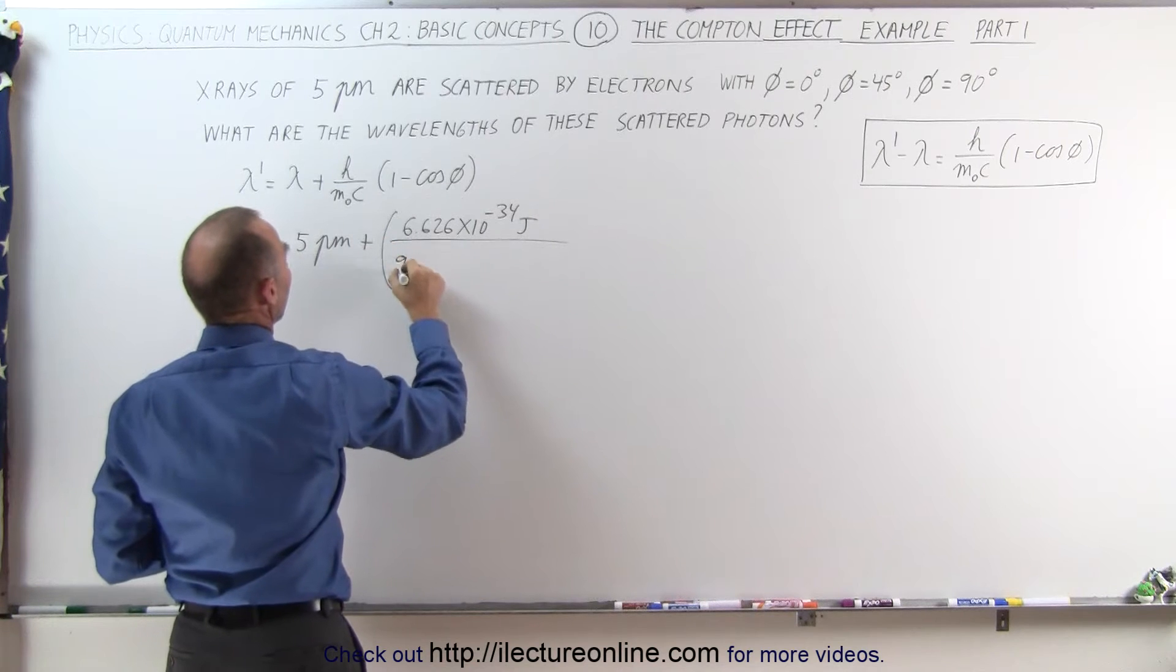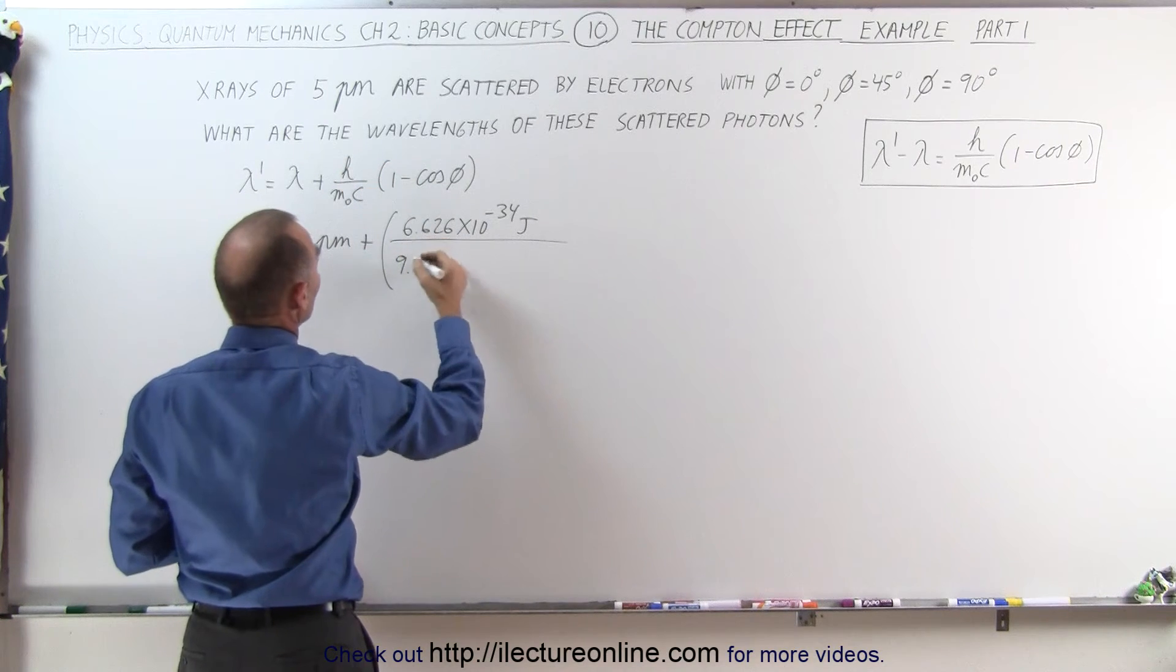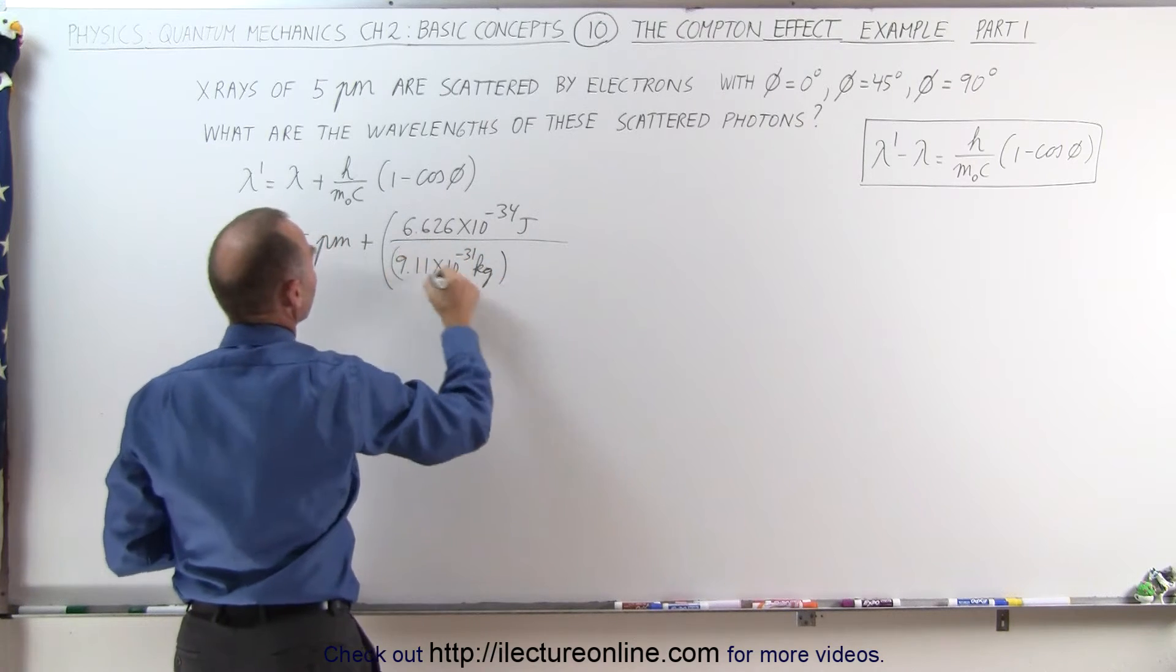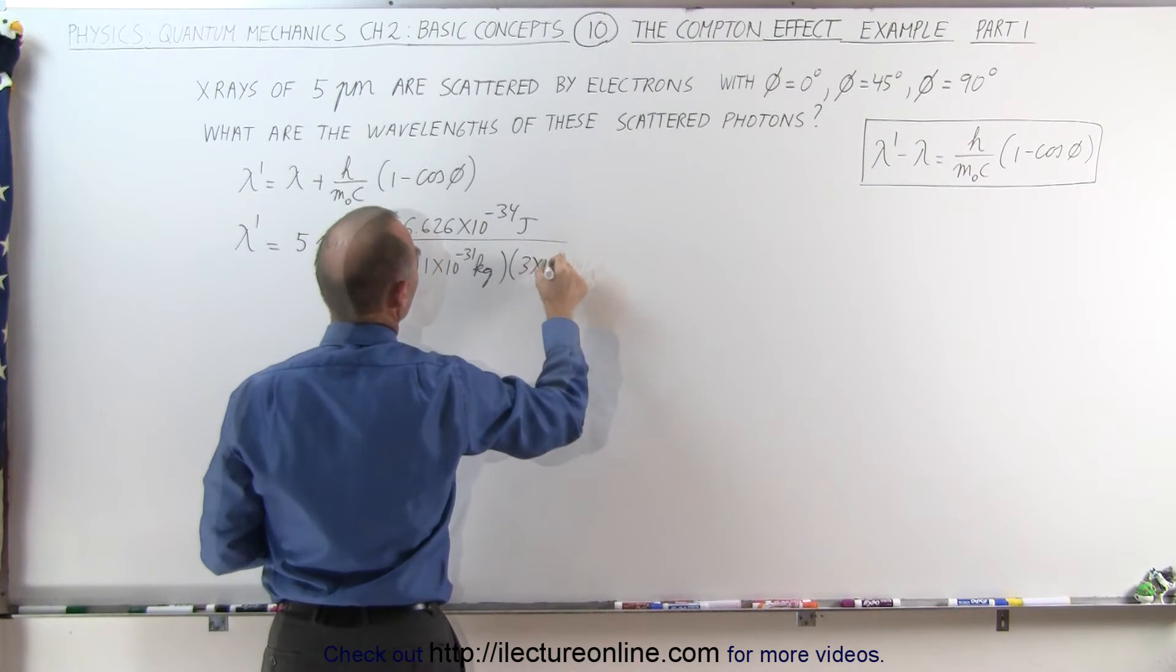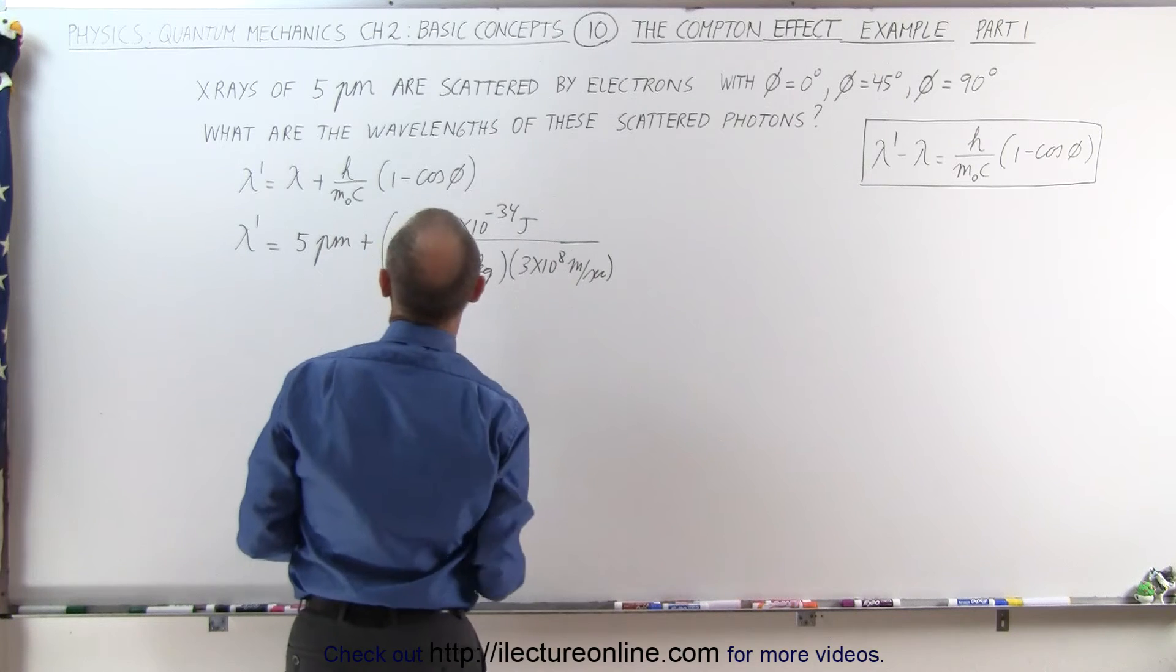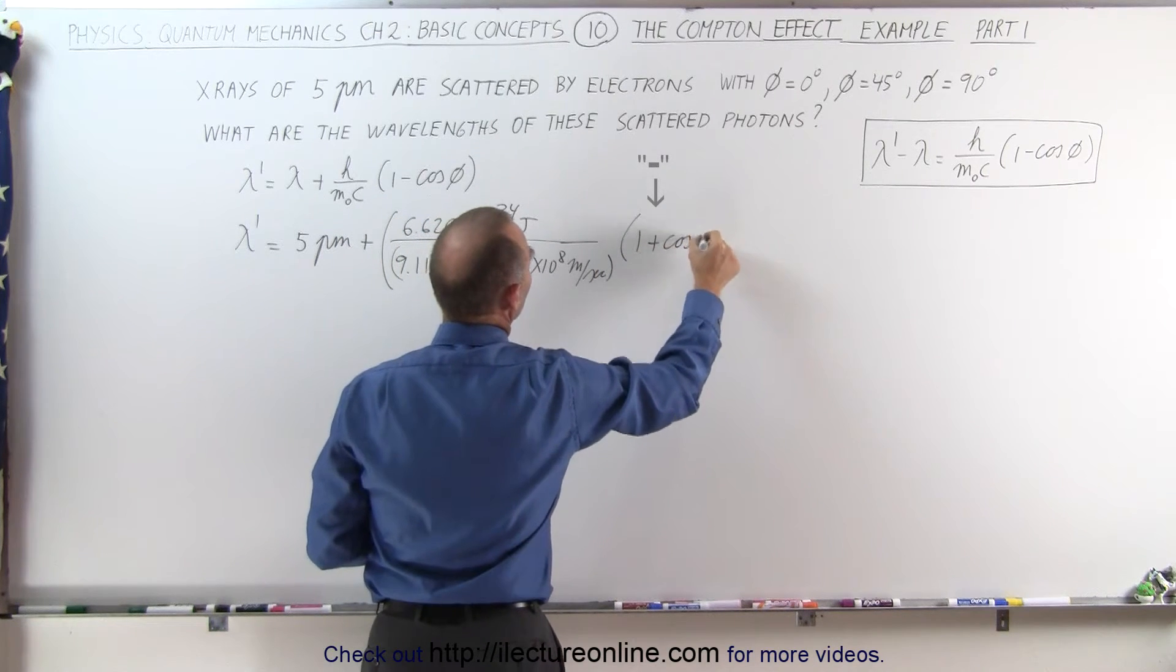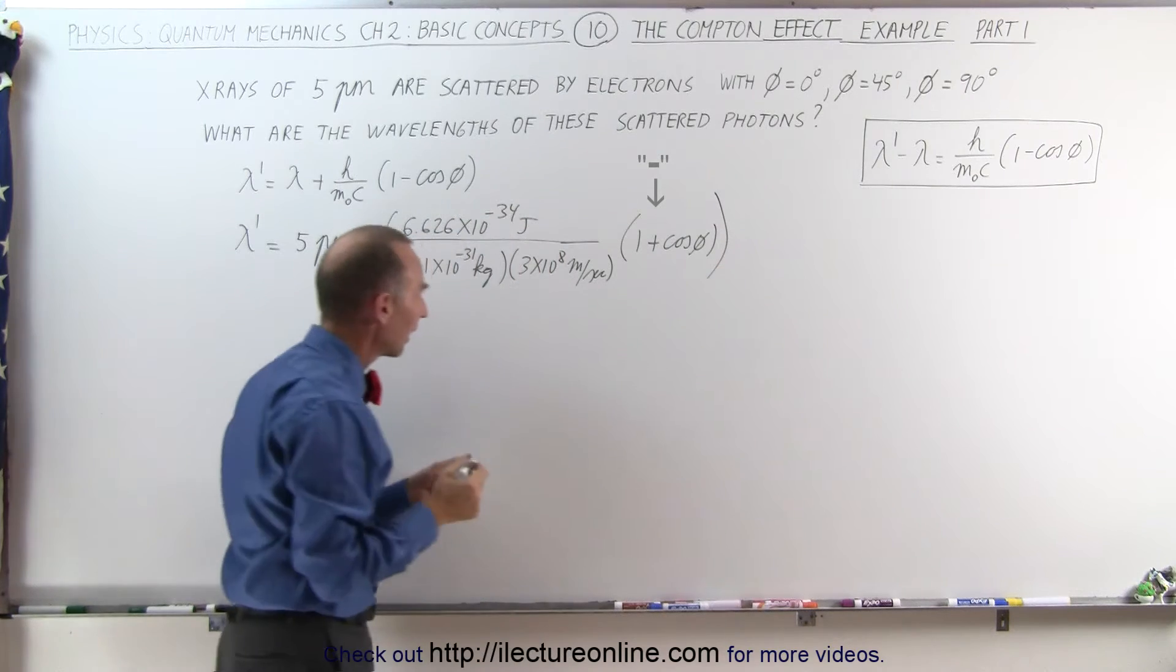divided by the mass of the scattering particle which in this case is an electron times the speed of light, and that has to be multiplied times 1 plus the cosine of phi.